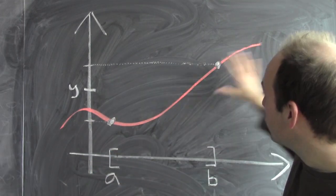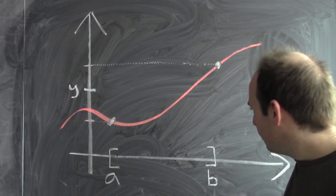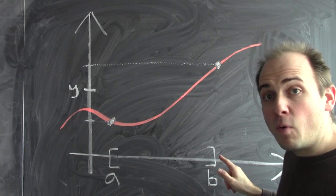Here's one of them. I've graphed just some random looking continuous function, and I've picked a couple input points. Input point a, input point b.